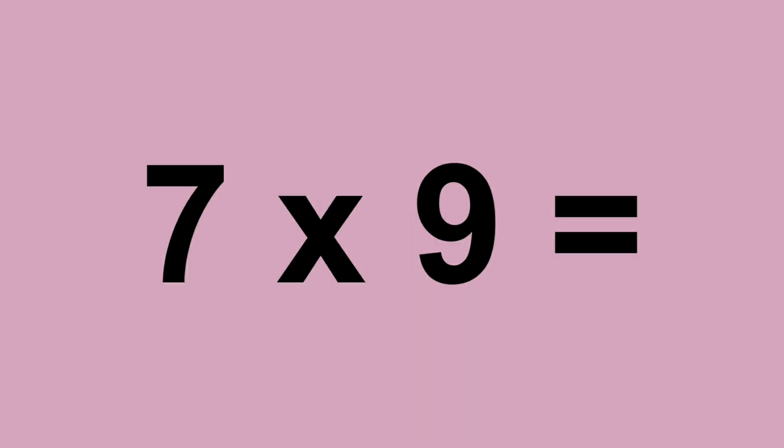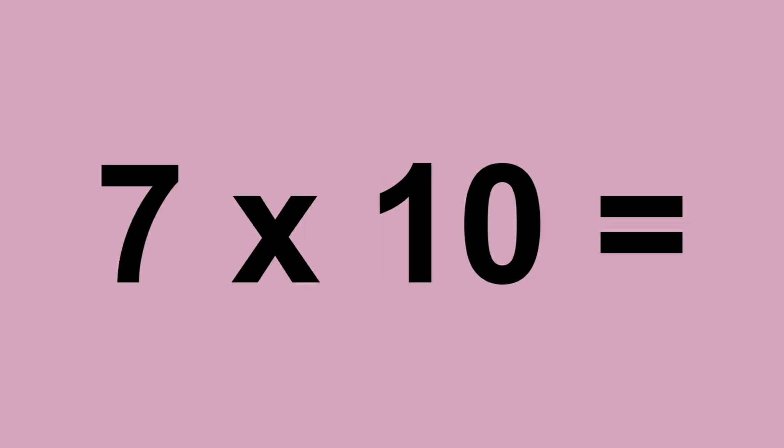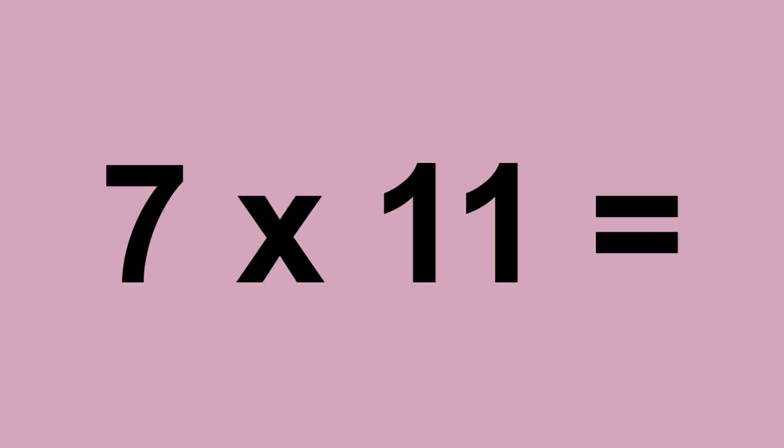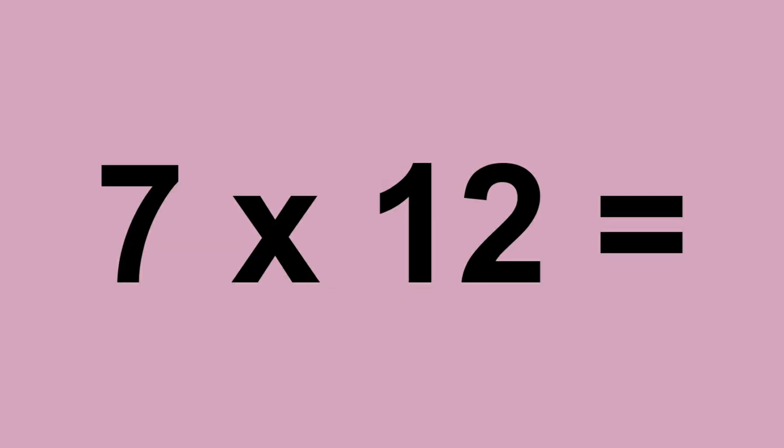Seven times nine equals sixty-three. Seven times ten equals seventy. Seven times eleven equals seventy-seven. Seven times twelve equals eighty-four.